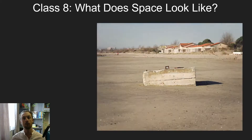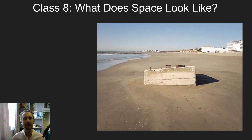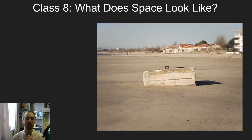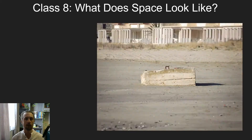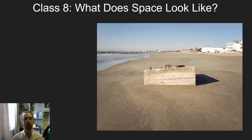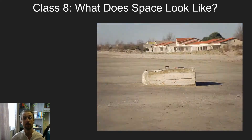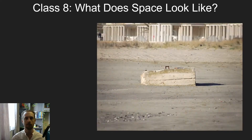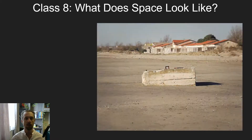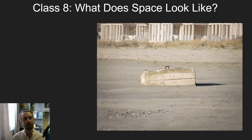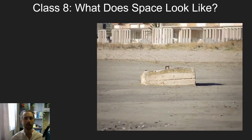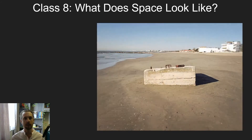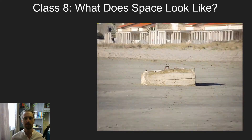Hi everyone. Welcome to the pre-recorded lecture for class 8. This is the second lecture in the final topic for my section of spatial practices, and this topic is called 'What Does Space Look Like?' Last week we did a close reading of Jan Crick's text on axonometry and parallel projection, and this week we're going to be looking at perspective, linear perspective, vanishing points.